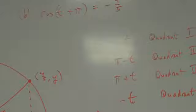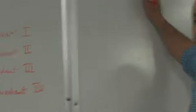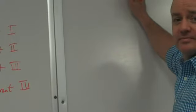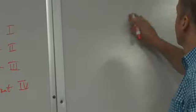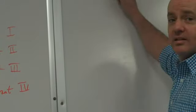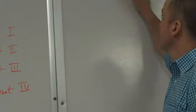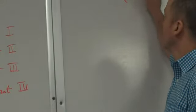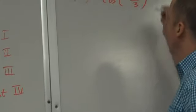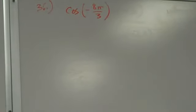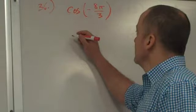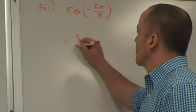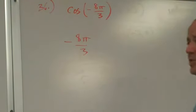Now number 36. Follow the camera over to this board and read to me what 36 is. Evaluate the trigonometric function using its period as an aid. Cosine of negative 8 pi over 3. Negative 8 pi over 3. Negative 8 pi is going backwards.